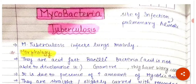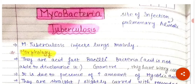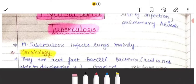Hello everyone. In today's lecture we are going to discuss tuberculosis, which is caused by mycobacteria. Mycobacterium tuberculosis site of infection is the pulmonary alveoli — it mainly infects the lungs. It is an acid-fast bacteria.